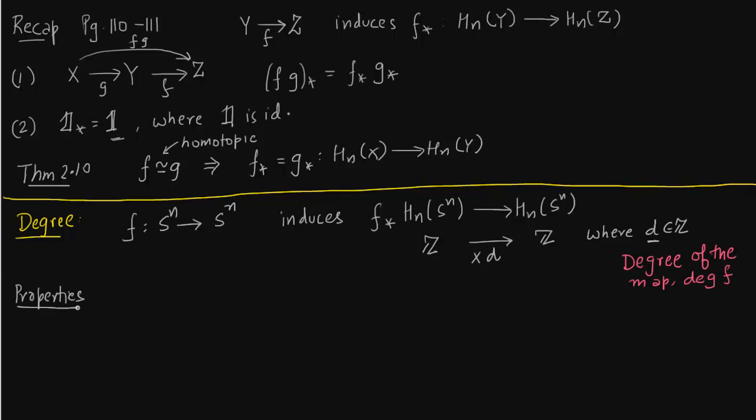So the first property I am going to just copy the property 2 which was written above the yellow line, that is 1_star equals to 1. So if the map f is nothing but identity it takes a sphere to sphere then degree of map is 1. Now this is pretty clear. Since f is identity so it has to take H_n(S^n) to H_n(S^n) so multiplication by d is nothing but multiplication by 1. Because the homomorphism has to be the identity map now and it will be identity map only if d is 1. So that gives you degree of d is 1.